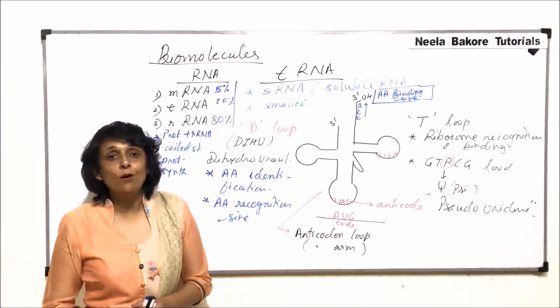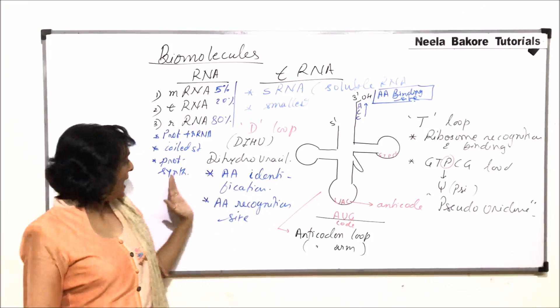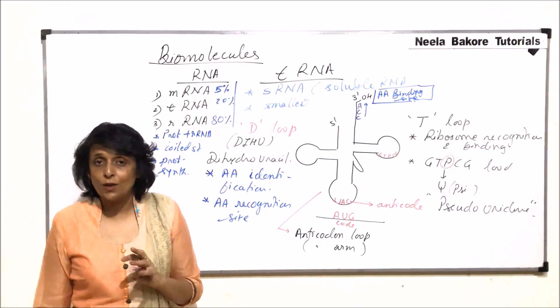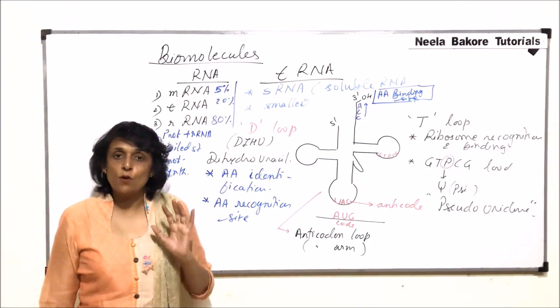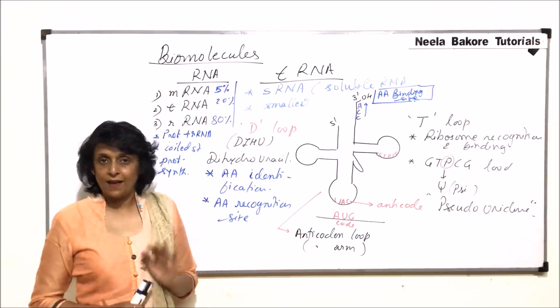So this is how the two RNAs that is mRNA and tRNA structures are and about rRNA only this much is known that it helps in protein synthesis. It is some kind of a coiled structure and made up of proteins and rRNAs.